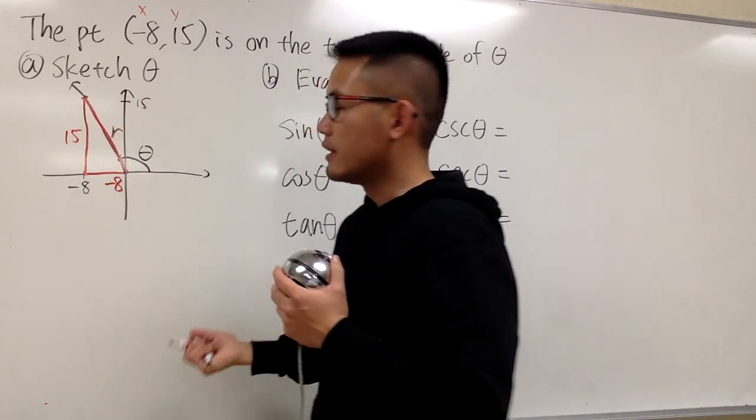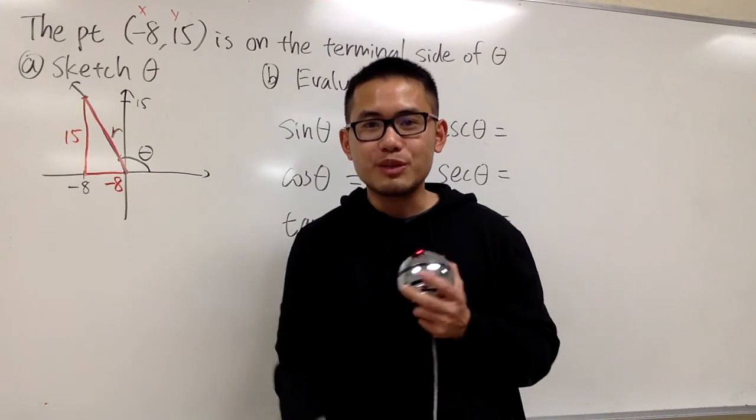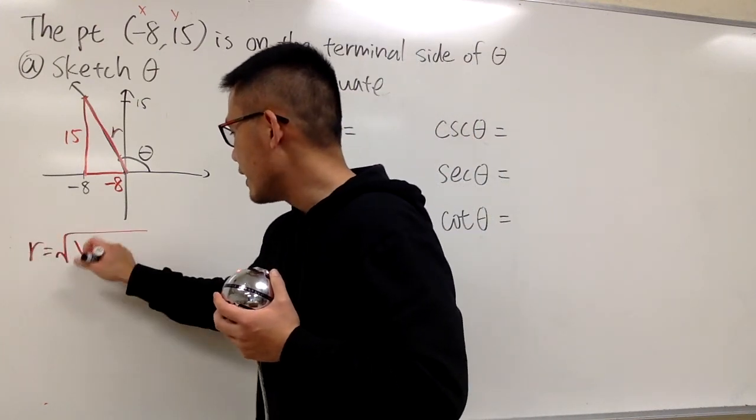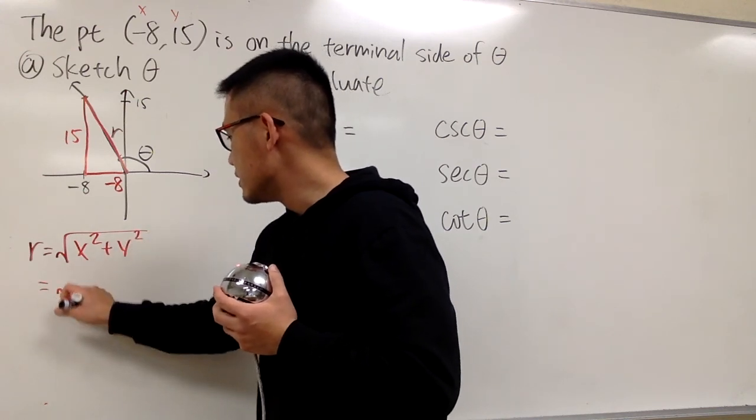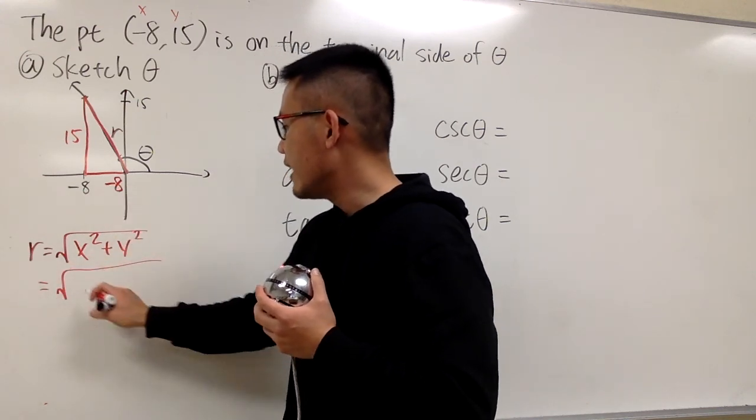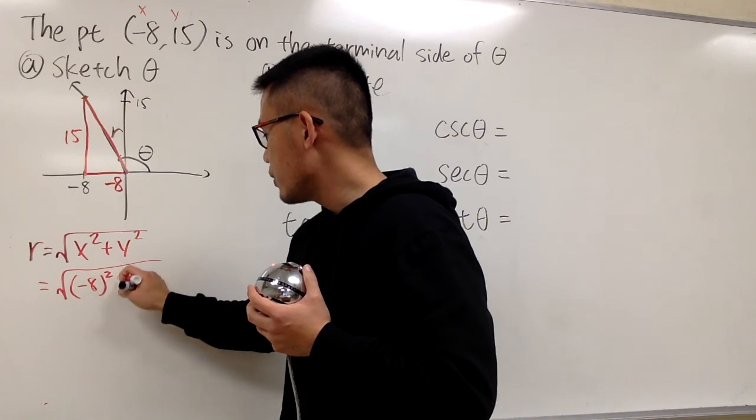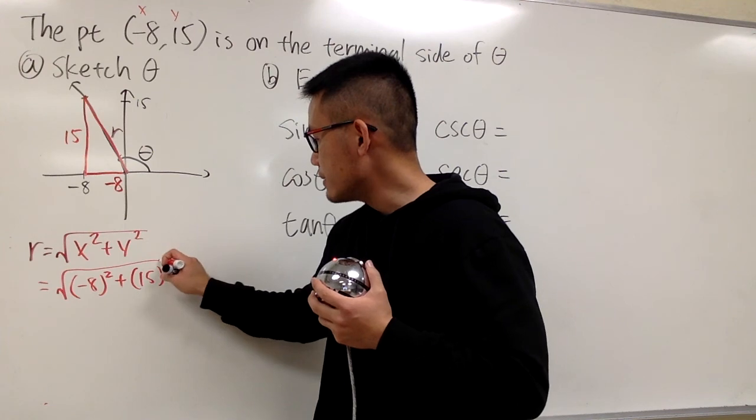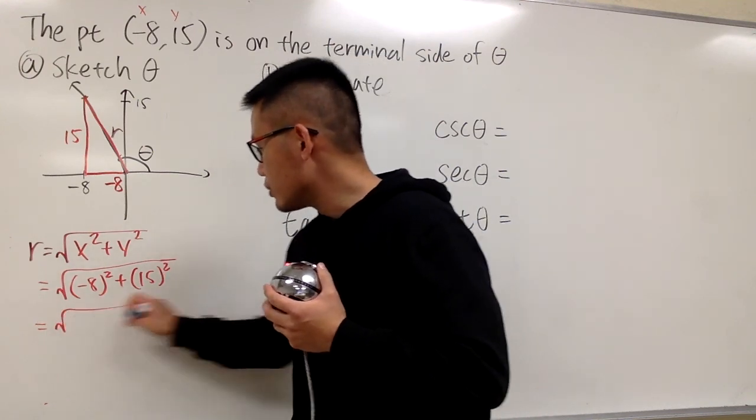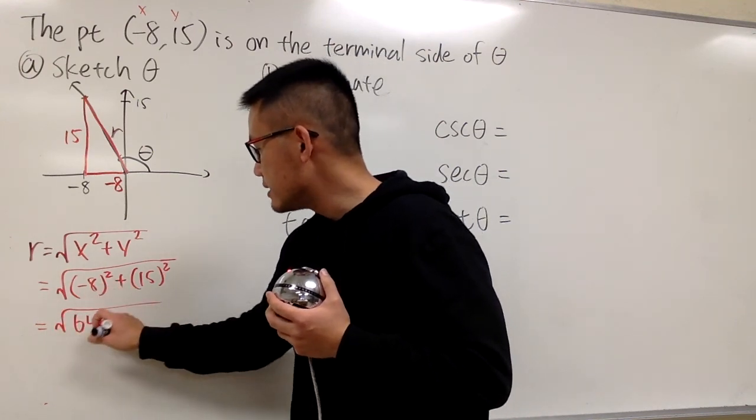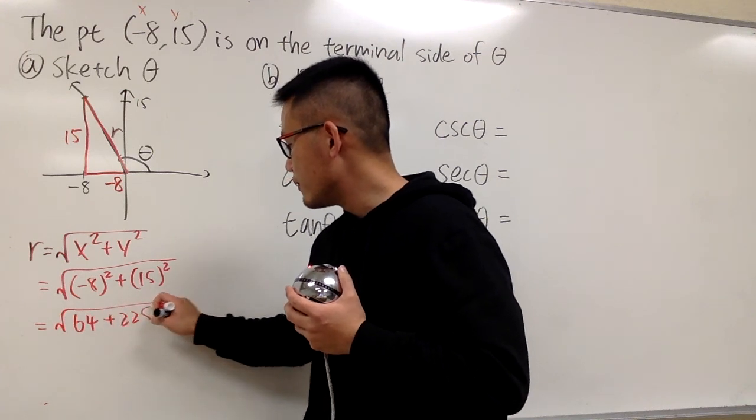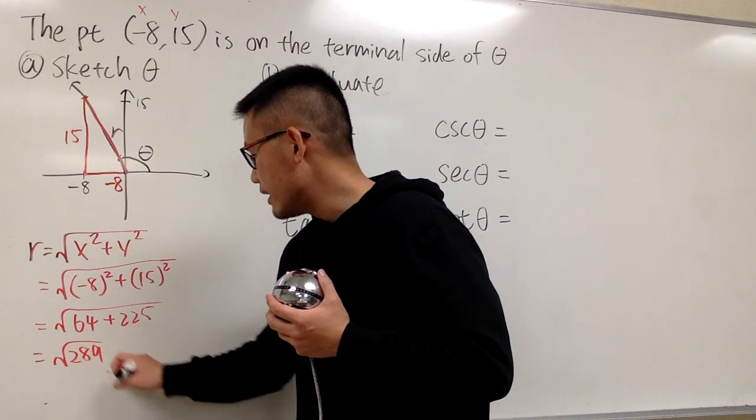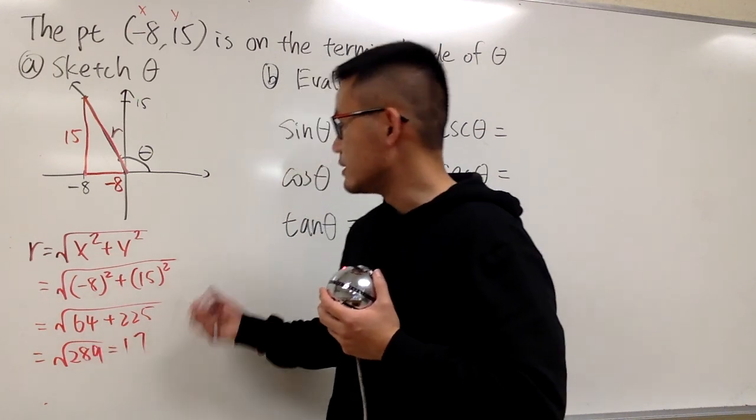So I have to figure out what r is. And we have the formula. It's just the Pythagorean theorem. r is equal to square root of x squared plus y squared. x is negative 8, so put in negative 8 squared. And we add it with the y is 15, so put in 15 squared. This is going to give us positive 64, and this is positive 225. Altogether, this is square root of 289, and that's equal to 17.